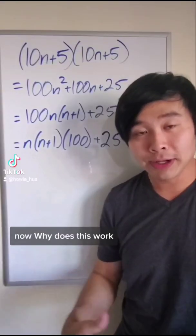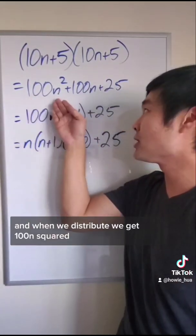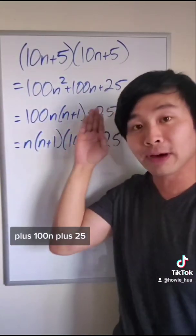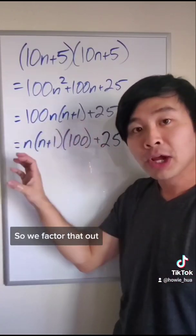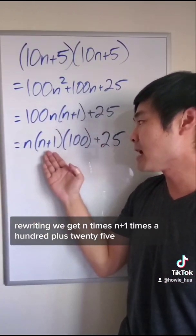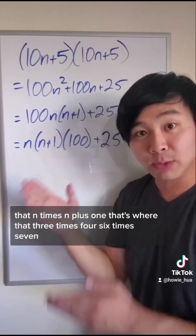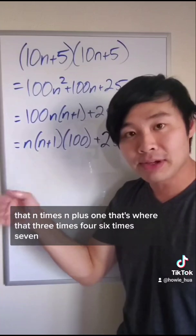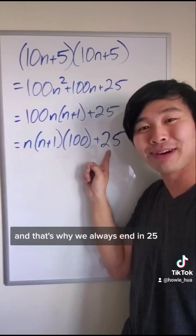Now why does this work? Squaring numbers that end in five can be written in this form right here. And when we distribute, we get 100 n squared plus 100 n plus 25. Both of the first two terms have 100 n in common, so we factor that out. Rewriting, we get n times n plus 1 times 100 plus 25. That n times n plus 1, that's where that 3 times 4, 6 times 7, 10 times 11 comes from, ending in the hundreds place. And that's why we always end in 25.